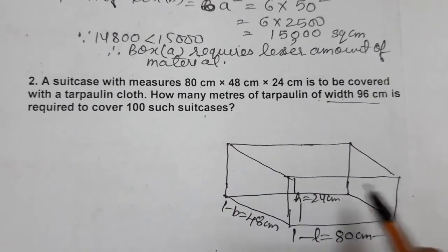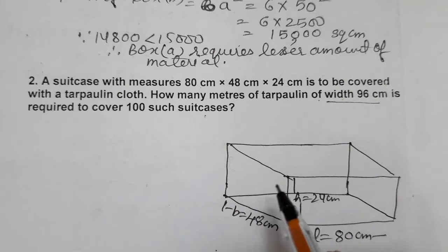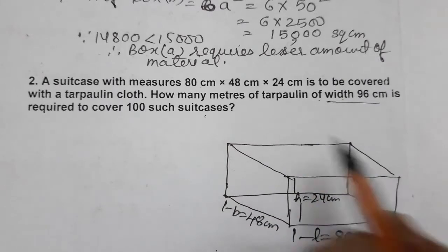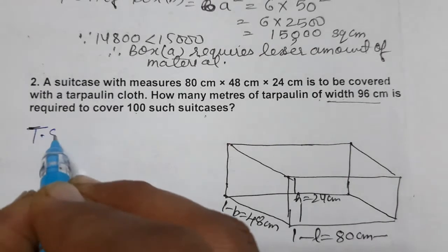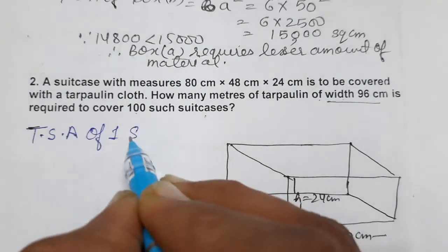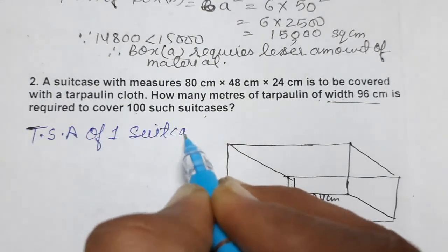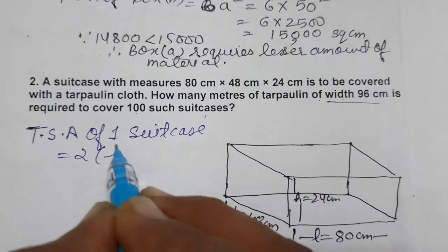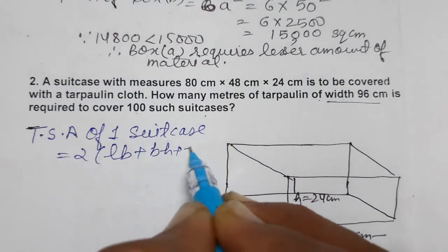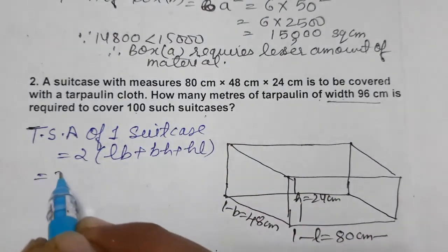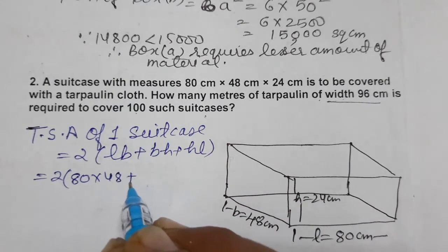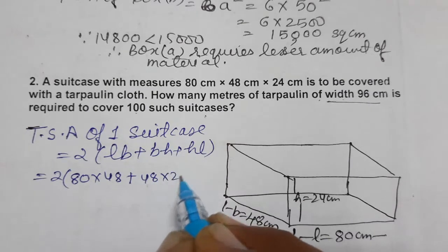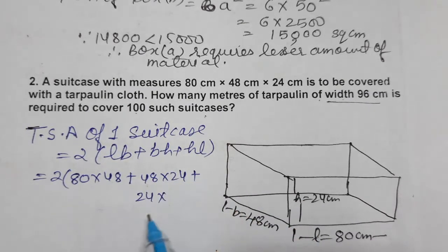First we will find the total surface area of one suitcase. Total surface area equals 2(LB + BH + HL). Length is 80, breadth is 48, and height is 24.